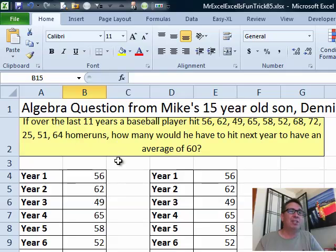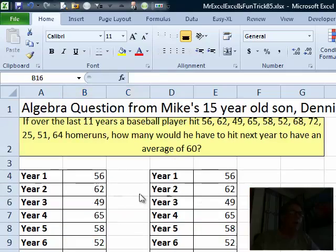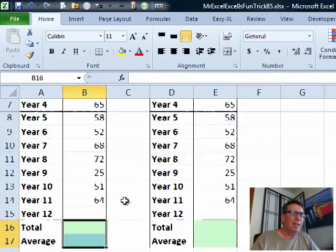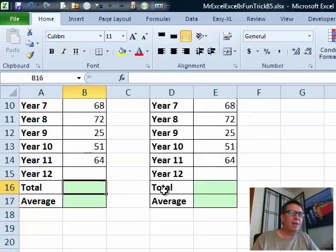Today's question sent in by Dennis. Dennis is Mike's 15-year-old son. I'm guessing this came from a math class, maybe even an algebra class. If over the last 11 years a baseball player hits these number of runs, how many would you have to hit next year to have an average of 60?